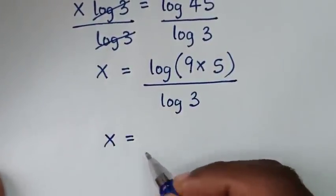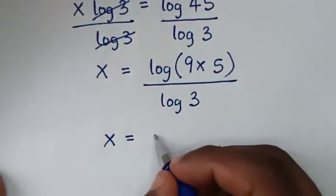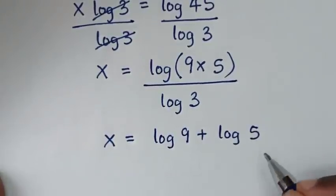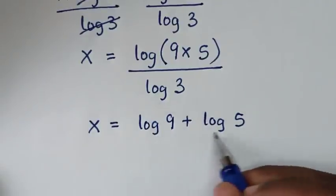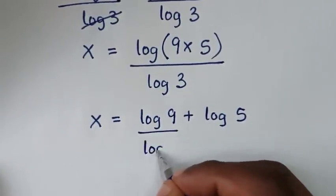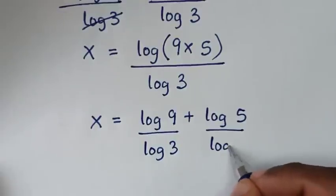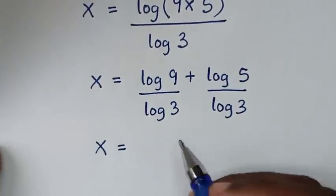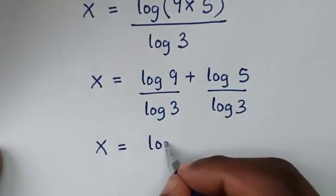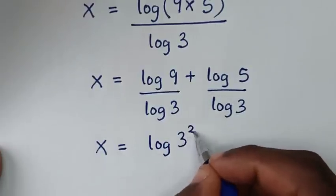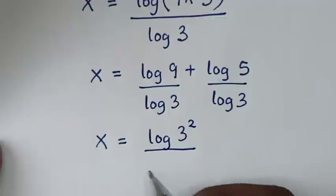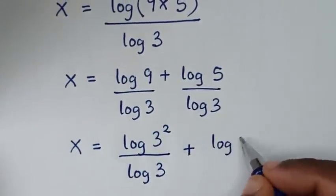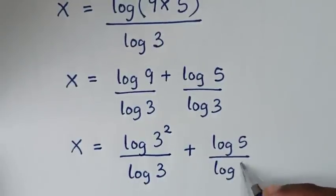In the next step, x is equal to — here log of 9 times 5 is the same as log of 9 plus log of 5. We divide by log of 3 in each part, so it will be log of 9 over log of 3, plus log of 5 over log of 3. Here, 9 is the same as 3 squared.